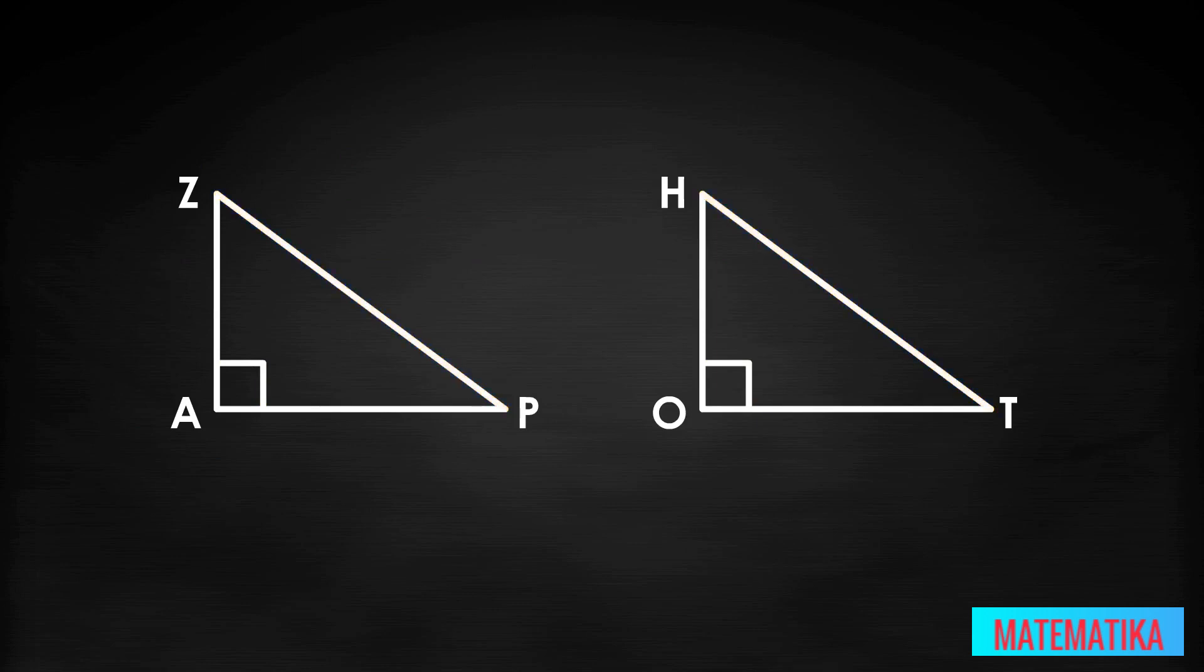We are told that the hypotenuses ZP and HT are congruent, which is why they have the little matching hash marks. We are also told that acute angle Z and angle H are congruent, shown by their own hash marks.